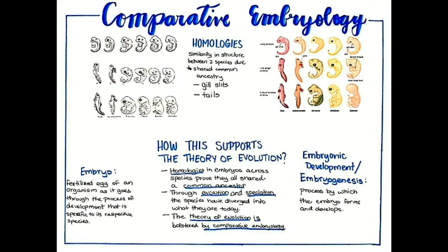Another vocab word I am going to be using is homologies, which is a similarity in structure between two species due to their shared common ancestry, according to the theory of evolution. As we analyze these two datasets, we can see the homologies, or similar structures, across all the species during their early embryo stages.